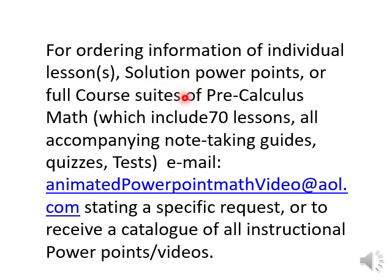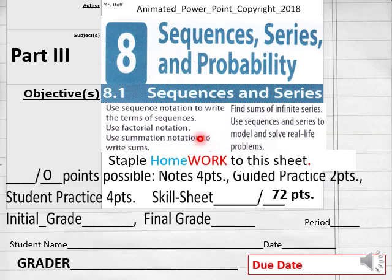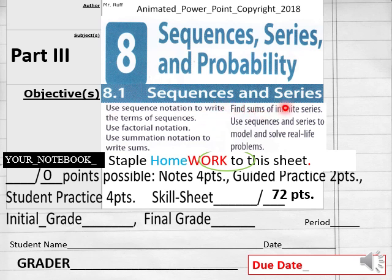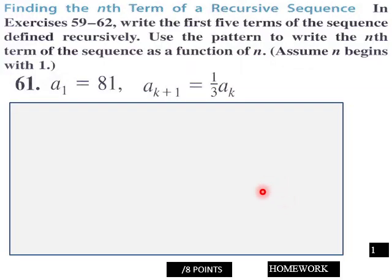Getting ready to do lesson 8.1 part 3 homework for pre-calculus math today. For our part 3 homework on 8.1 sequences and series, we have 72 points in this homework assignment. Students in my classroom, put your name, date, and period. If you're online or a homeschooler, please put your due date down here on page 1 of part 3 homework.